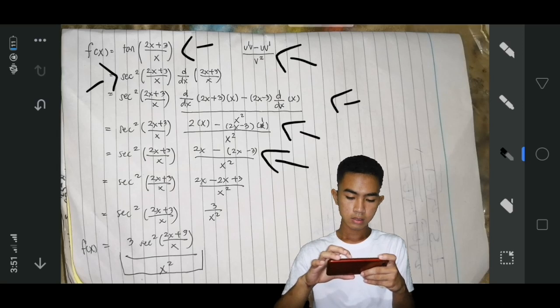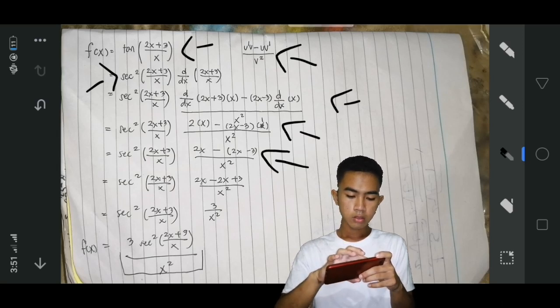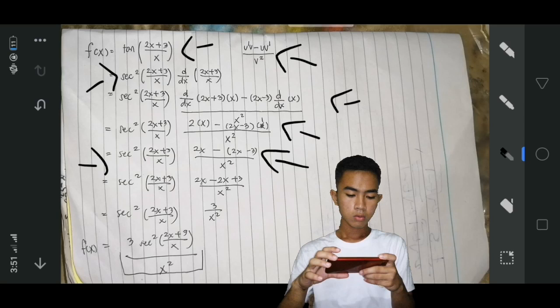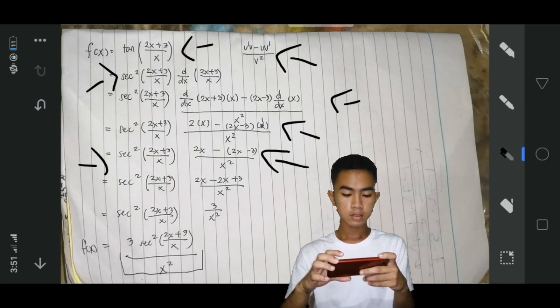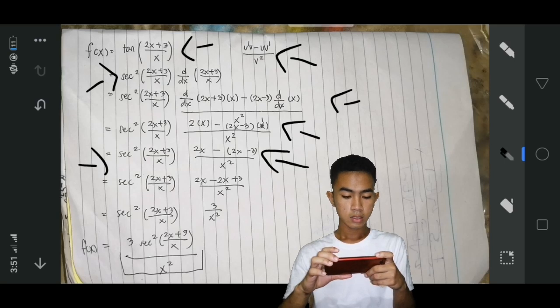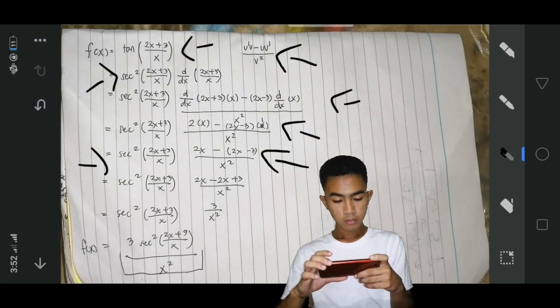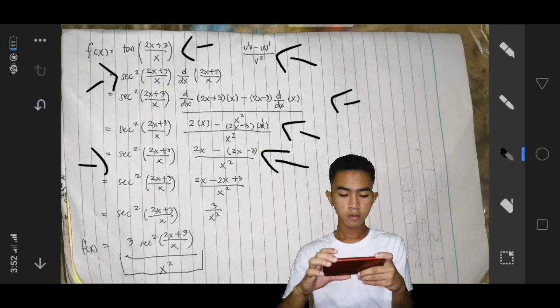So, we came up to this. Secant squared of 2x plus 3 over x times 2x minus 2x minus 3 over x squared.